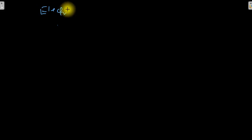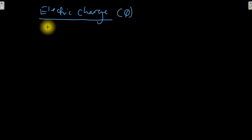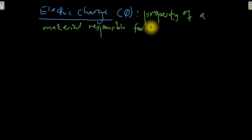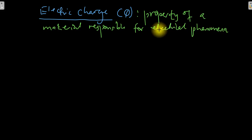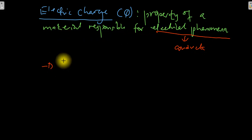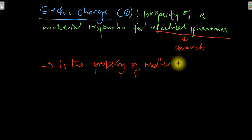Let us look at electric charge. Electric charge — we commonly represent this with the letter Q. Electric charge is the property of a material responsible for electrical phenomena. Electrical phenomena in materials includes properties such as the ability to conduct electricity and many other phenomena associated with electricity. In other terms, electric charge is the property of matter that causes it to experience a force when placed in an electromagnetic field.